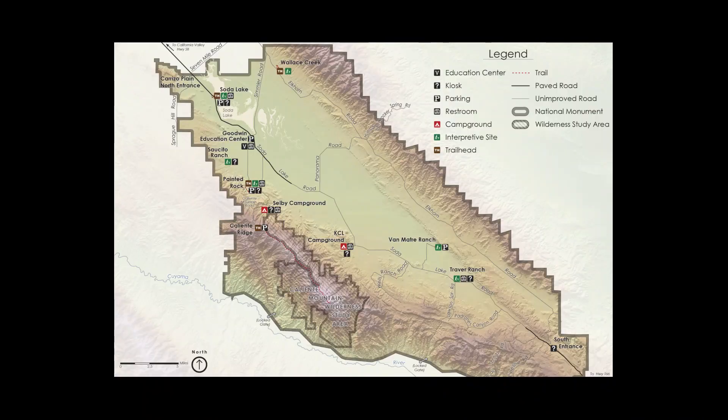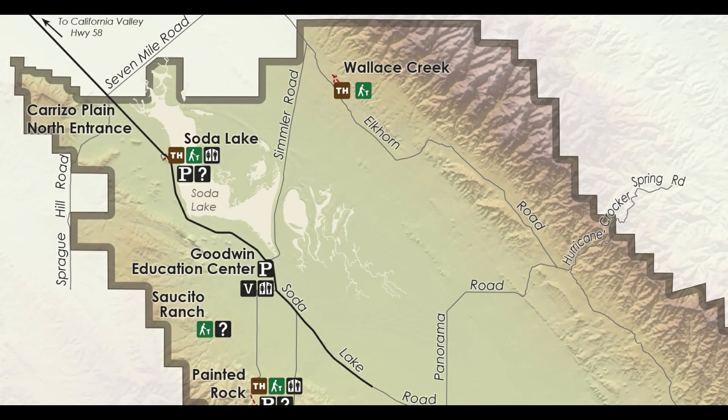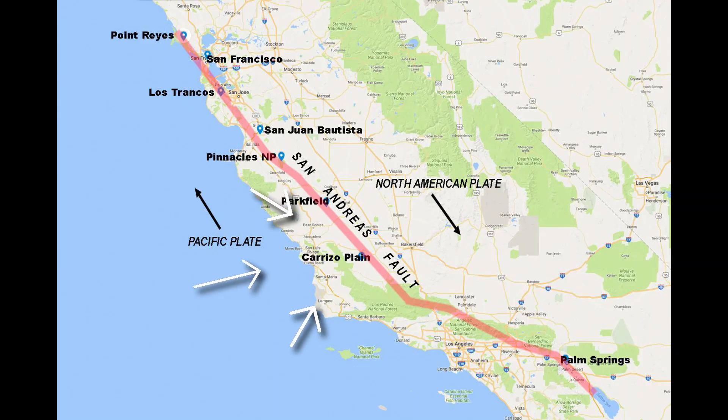It's my first time ever at the Carrizo Plains National Monument. We just arrived — we went to the Carrizo Plains to see the super bloom in 2019, but I also knew there's a geologic feature at Wallace Creek involving the San Andreas Fault that I wanted to see. This map shows the Carrizo Plains right along the San Andreas Fault line.